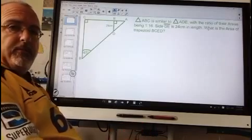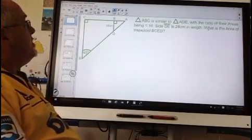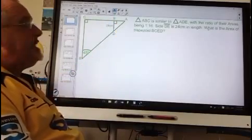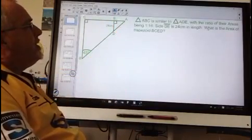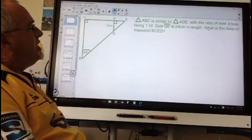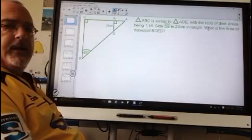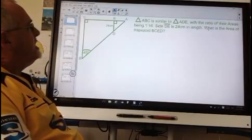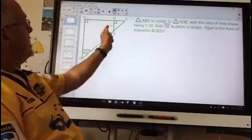Let's look at the problem. Triangle ABC, the larger triangle, is similar to triangle ADE, the smaller one. With the ratio of their areas being 1 to 16, side DE is 24 centimeters in length. What is the area of trapezoid BCED? That's this trapezoid right here.